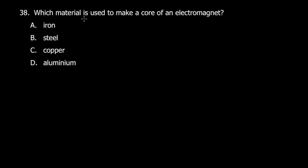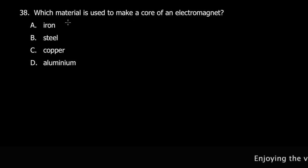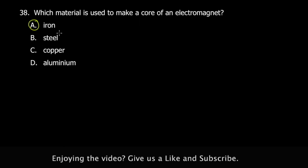Let's quickly move to question 38. Which material is used to make a core of an electromagnet? We actually use iron. The reason we use iron is that iron is a soft magnetic material. You can magnetize it and it quickly loses its magnetization. The purpose of an electromagnet is...